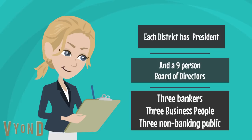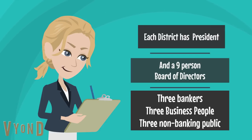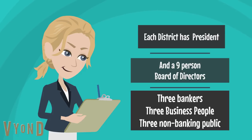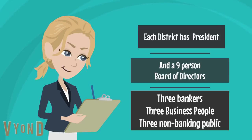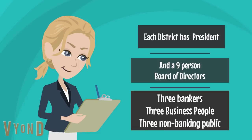The board of directors of a district includes three bankers elected by the bankers in their district, three business people, and three members of the non-banking public. The chair of that board has to be one of the non-banking public members.